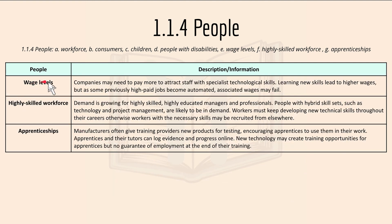For wage levels: companies may need to pay more to attract staff with specialist technological skills, and learning new skills leads to higher wages. However, as some previously high-paid jobs become automated, wages associated with those roles may fall.